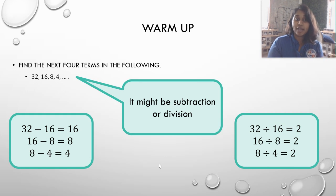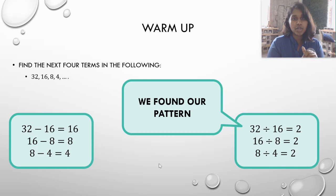So I'm going to go ahead and try both subtraction and division. On the left-hand side, we have subtraction. A pattern is clearly occurring on the left-hand side, but a really nice pattern is occurring with division. 32 divided by 16 is 2, 16 divided by 8 is 2, 8 divided by 4 is also 2. So that's our pattern.